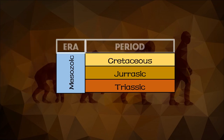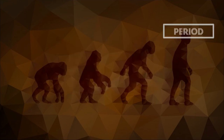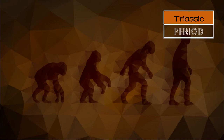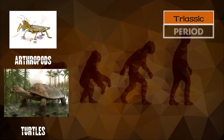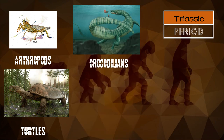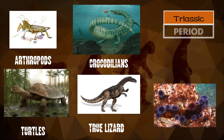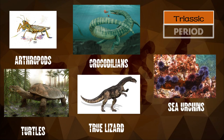Under the Mesozoic era, we have three periods: the Triassic, Jurassic, and Cretaceous. The first period is the Triassic period, which extended from 248 million to 216 million years ago. Life forms in the Triassic period include arthropods, turtles, crocodilians, true lizards, bony fishes, sea urchins, marine reptiles, pteropsids, the first mammal-like reptiles, and also early dinosaurs.